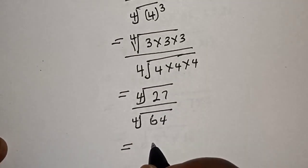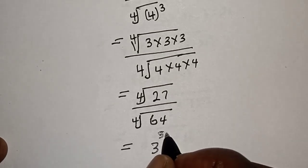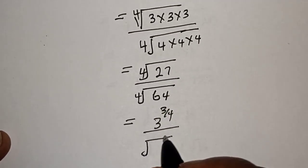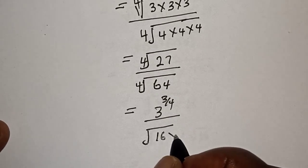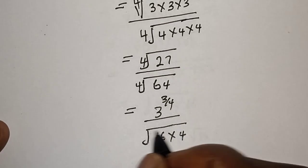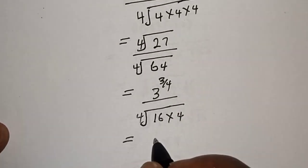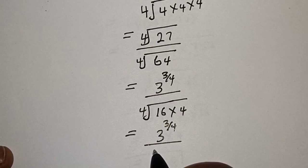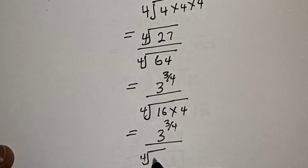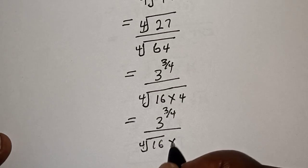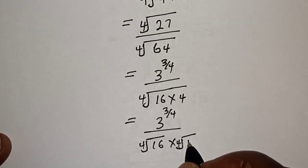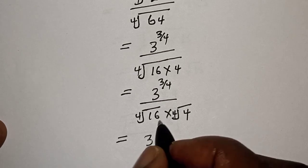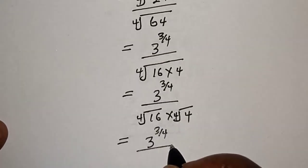This is equal to the 4th root of 16 multiplied by 4, and this is equal to 3 raised to power 3 over 4, over the 4th root of 16 multiplied by the 4th root of 4.